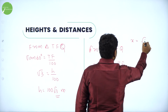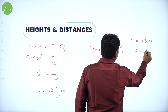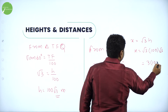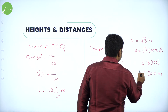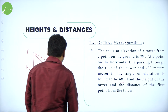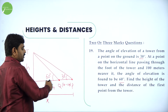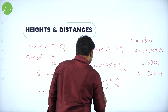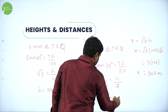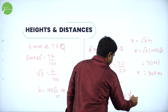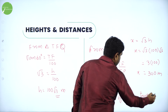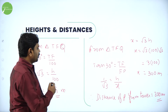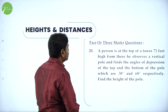Substituting H equals 100 root 3: x equals root 3 times 100 root 3 equals 3 times 100 equals 300 meters. So the distance of the first point P from the tower is 300 meters.